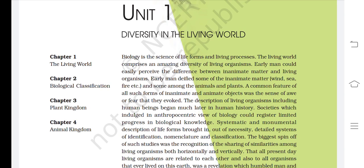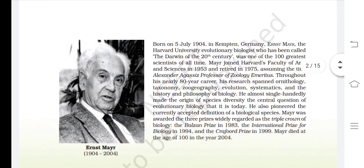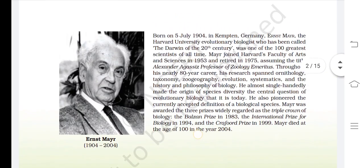In every unit of biology there is a mention of a scientist. In this unit we're talking about Ernst Mayr, born on 5th July 1904 in Kempton, Germany. Ernst Mayr, the Harvard University evolutionary biologist, has been called the Darwin of the 20th century and was one of the hundred greatest scientists of all time.